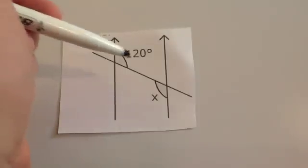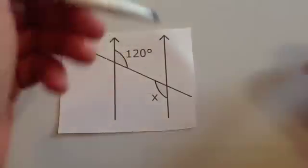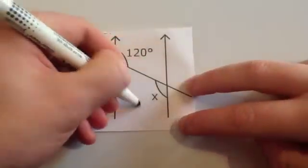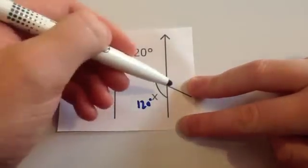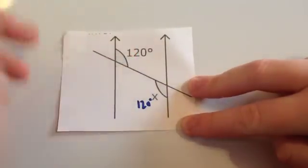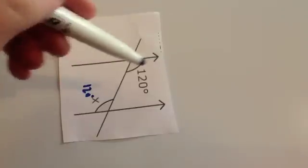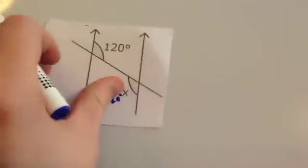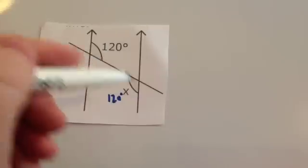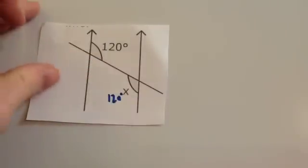If this angle was 120 degrees, this angle would also be 120 degrees. This time it's a Z angle or an alternate angle — if you were to turn it this way you would see the Z shape. So these angles are alternate, and therefore they're equal because they're alternate angles.